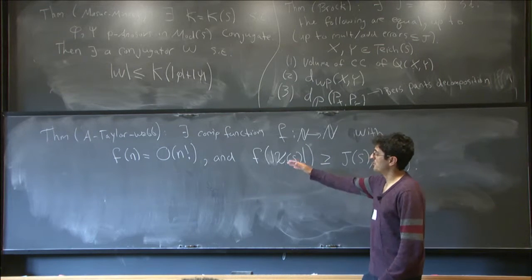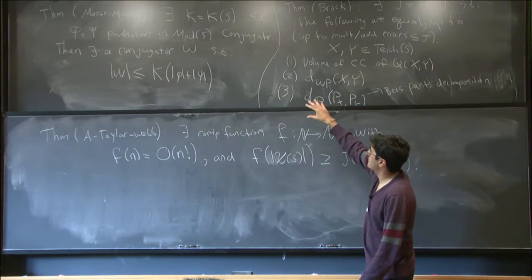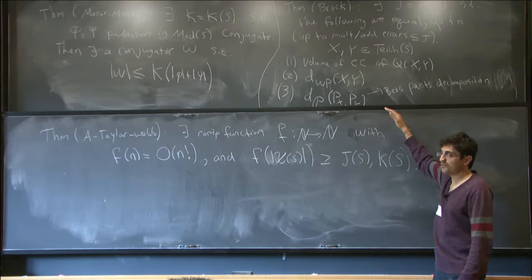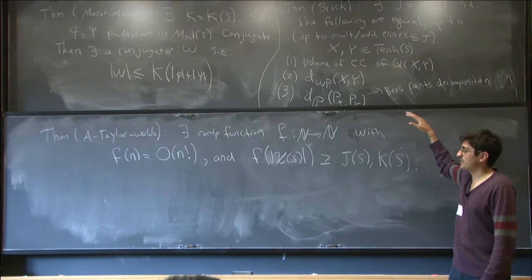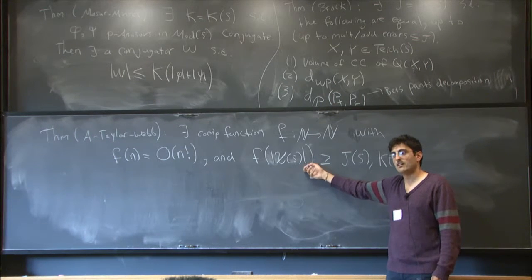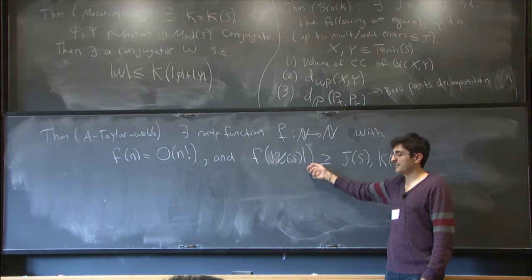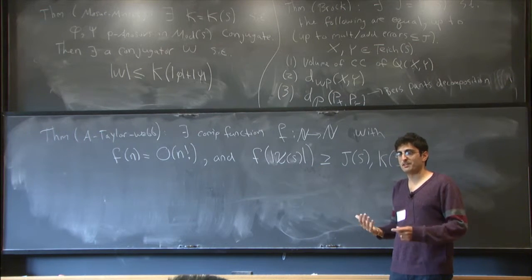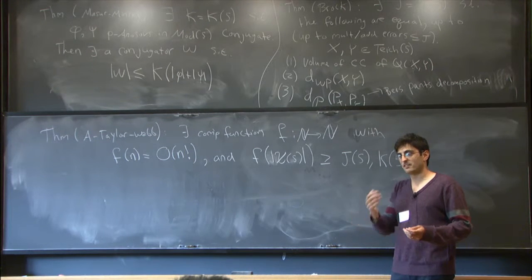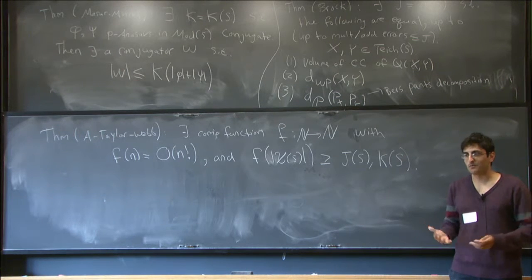The reason I stated both theorems is that these two theorems are two of many different applications that our main technique works to give effective control for. What we really do is give effective estimates for these formulas for measuring distances in the mapping class group and in the pants graph due to Masur and Minsky. This is a testament to how applicable those formulas are — people have used them all over the place.